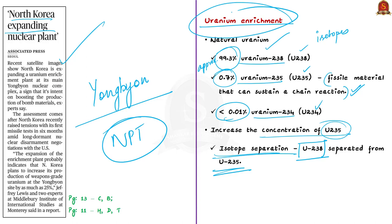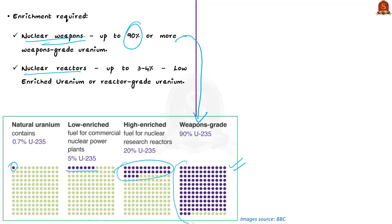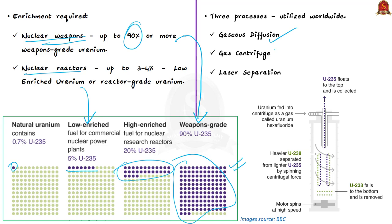The level of enrichment varies according to use. For nuclear weapons, enrichment is required up to 90% or more — known as weapons-grade uranium. For nuclear reactors, enrichment of just 3 to 4% is required — known as low enriched uranium or reactor-grade uranium. Enrichment can be done through several processes, mainly three: gaseous diffusion, gas centrifuge, and laser separation.